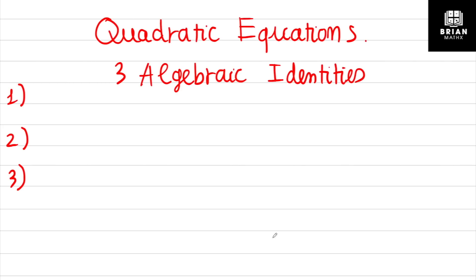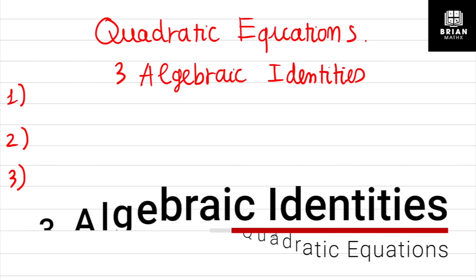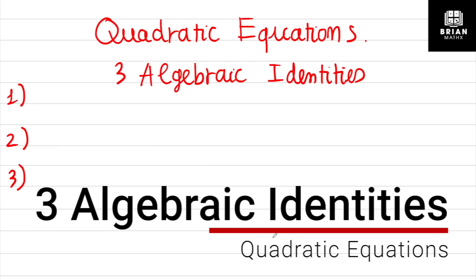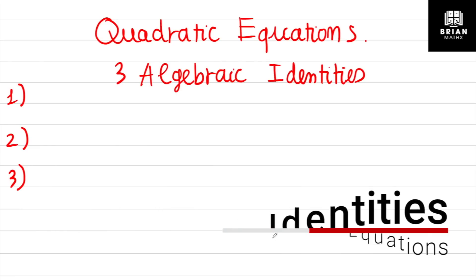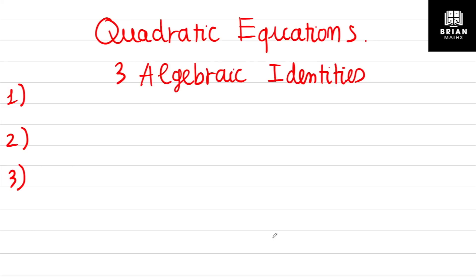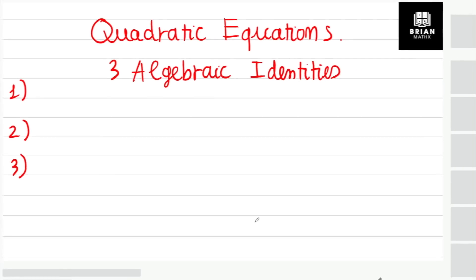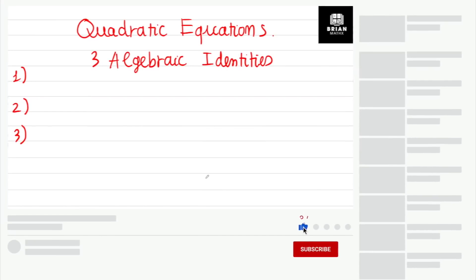Hello guys, welcome to Brian Maddox. In this video, we're learning about quadratic equations but we focus on three algebraic identities. An algebraic identity is a formula you can apply to quadratic equations to make factorizing, solving, or completing the square easier. I will tell you about the three most important algebraic identities that you can apply immediately to your quadratic equation exercises.